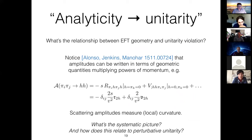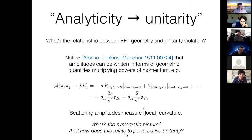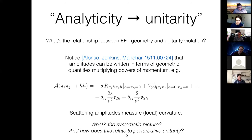Coming back to the connection Falkowski-Rattazzi made between analyticity of the potential and unitarity: the bigger question is, if we can understand HEFT versus SMEFT from the perspective of geometry, what's the relationship between the EFT geometry and unitarity violation? There's a series of papers by Alonso and company showing you can write scattering amplitudes involving Goldstones and Higgses in terms of geometric quantities in your EFT geometry multiplying powers of momentum. For example, the leading piece in Mandelstam S for two-Goldstone-to-two-Higgs scattering goes like the Riemann tensor with legs evaluated on two Goldstones and two Higgses, with subleading terms going like covariant derivatives of the scalar potential.